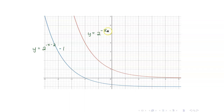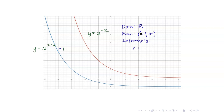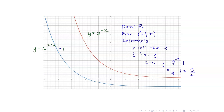The red graph is y equals 1 half raised to x, and the new graph is the function we are looking for. The domain is the set of all reals. Since you moved 1 unit downwards, the range is now negative 1 to positive infinity. The x-intercept is negative 2. For the y-intercept, set x to 0: y is 2 raised to negative 2 minus 1, which equals 1 fourth minus 1, equals negative 3 fourths. Your horizontal asymptote is the line y equals negative 1.